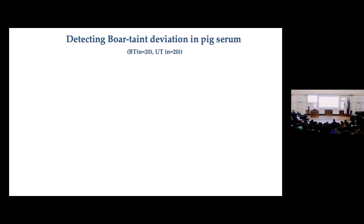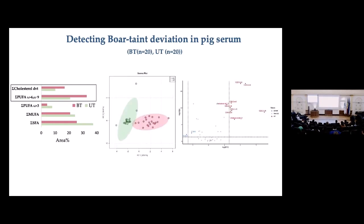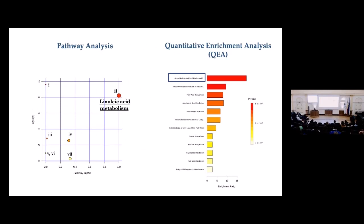For the boar taint detection part, we injected 40 serum samples — 20 from tainted and 20 from untainted pigs. Just by looking at area percentage contributions from different groups, cholesterol and omega-6 were significantly increased in the tainted pigs. We also conducted systematic chemometric screening; PCA showed clear separation, and volcano plot analysis supported the same findings seen in area percentage contributions. We then tried to connect the chemical information with the biological part, acknowledging the sample size is not large as it was an exploratory study. Pathway analysis and quantitative enrichment analysis both suggested significant involvement of the linoleic acid metabolism pathway.